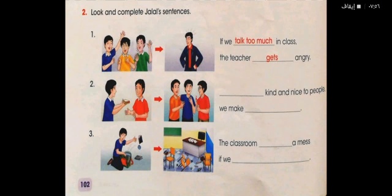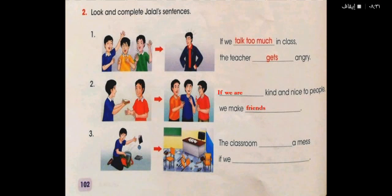Question number two: If we are kind and nice to people, we make friends. Question number three: The classroom is a mess. If we are untidy — or if we are naughty boys — the classroom is a mess.